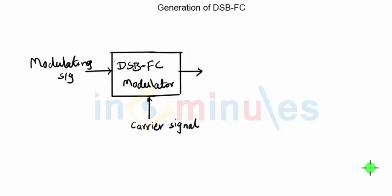Hello everyone, we are talking about generation of DSBFC. In the generation of DSBFC we have to discuss a specific circuit which will be called a DSBFC modulator. It is called a modulator because it will carry out the process of modulation, and in this process the modulator will take two signals as the input signals.